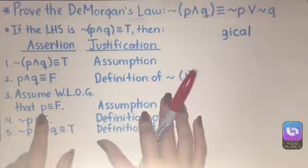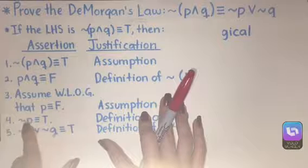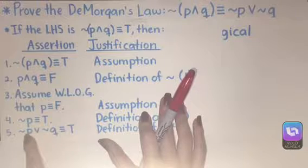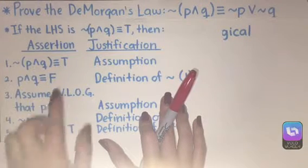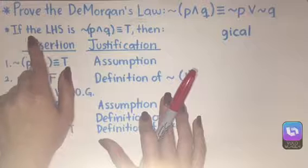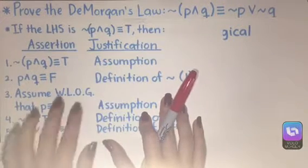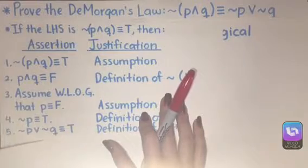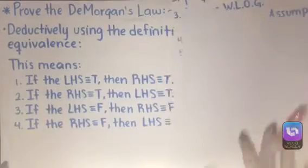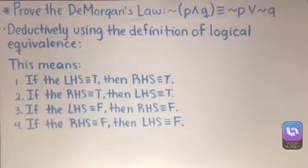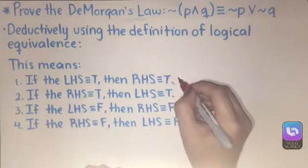This could have occurred also with Q: if Q was false, then the negation of Q would have been true, and either way the disjunction would still give us true. So we know this statement is valid — if the left-hand side is true, then the right-hand side is true. Check.